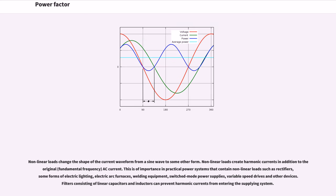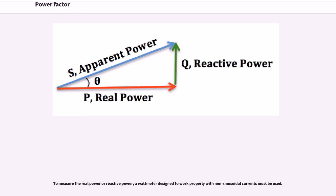Non-linear loads change the shape of the current waveform from a sine wave to some other form and create harmonic currents in addition to the original AC current. This is of importance in practical power systems that contain non-linear loads such as rectifiers, some forms of electric lighting, electric arc furnaces, welding equipment, switched-mode power supplies, variable speed drives, and other devices. Dot filters consisting of linear capacitors and inductors can prevent harmonic currents from entering the supplying system. To measure the real power or reactive power, a wattmeter designed to work properly with non-sinusoidal currents must be used.